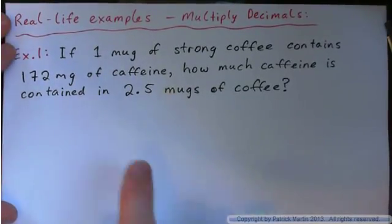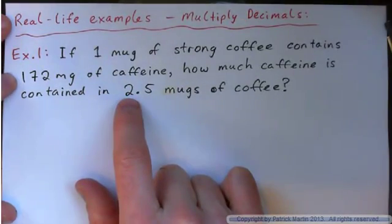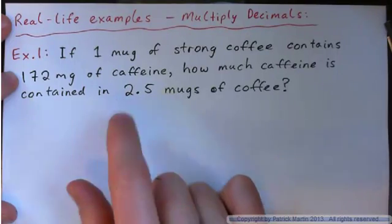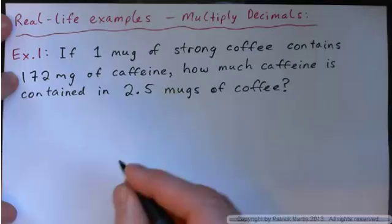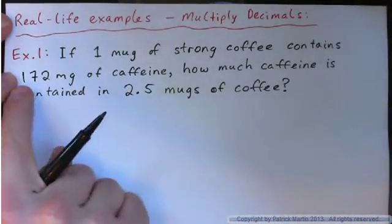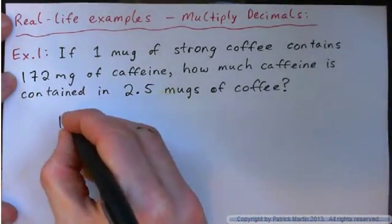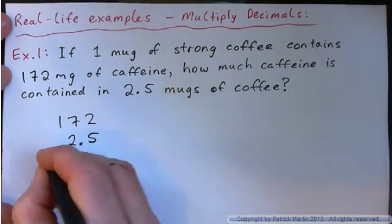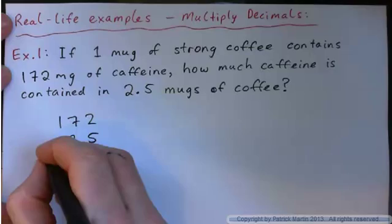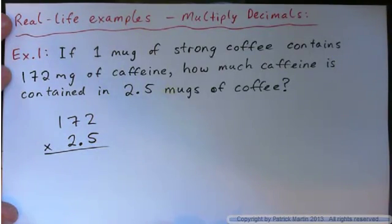So what should we do with these two numbers? Add, subtract, multiply or divide? Think you should multiply? Yep. So this has more digits in it. So I like to put that guy on the top. I like to put 2.5 on the bottom. And just go ahead and multiply. So please press pause and do this yourself. Then check to see if you get the same thing as me.